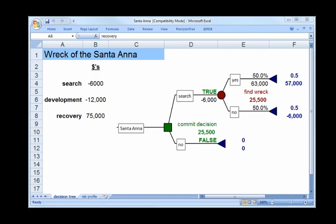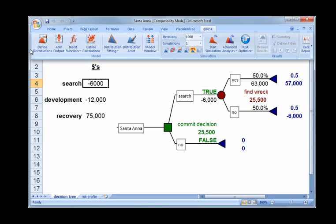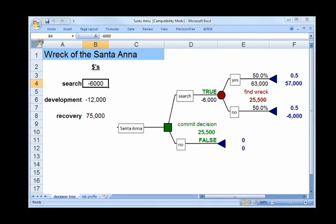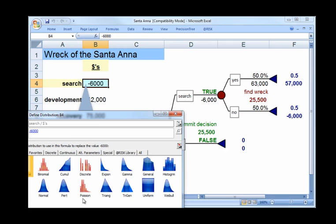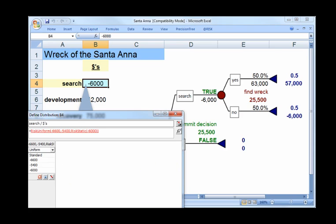With regard to search, we're told that the cost could be as high as $10,000 or as low as $2,000 with all values in between equally likely. That implies a uniform distribution between minus $10,000 and minus $2,000. To enter that, first let's click into the box where we're going to put it. I'm going to put it into the search box cost and then we go to the at-risk menu and you enter inputs by going to define distribution and we look for a uniform distribution. Here it is right here. We click on that, double click it.